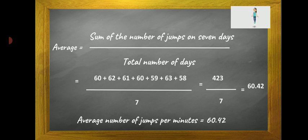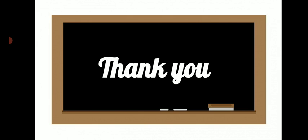Therefore, average number of jumps per minute is equal to 60.42. So students, today we have learned about how to calculate average. Thank you.